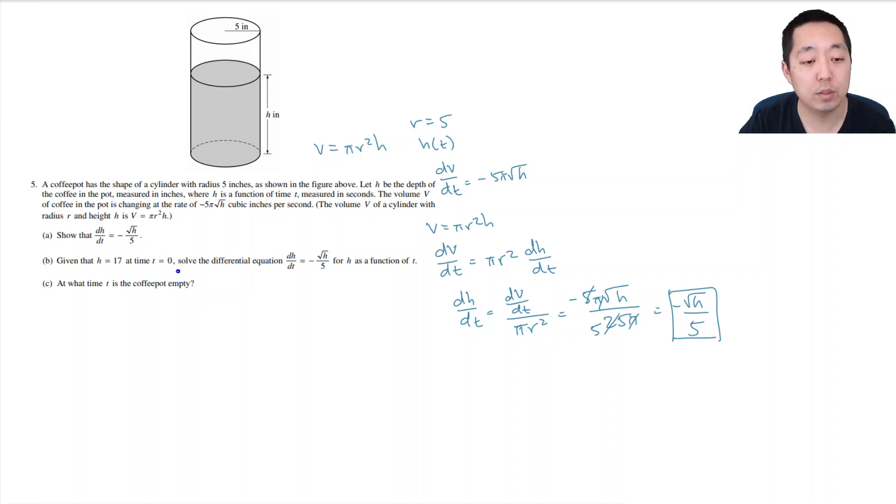Given that h equals 17 at t equals 0, solve the differential equation. We're going to do separation of variables. So I have dh/dt is equal to -√h/5. I bring the dt up here, I multiply by dt, that cancels it here, and I divide by √h. So I have dh/√h is equal to - I always like the constants in front - I write this as -1/5 dt.